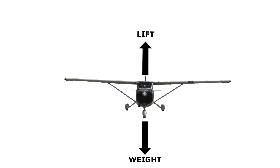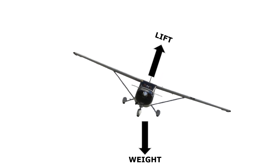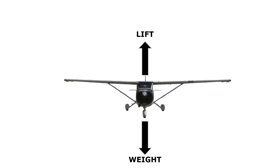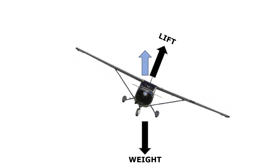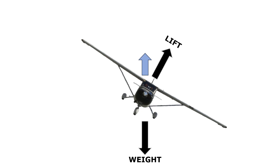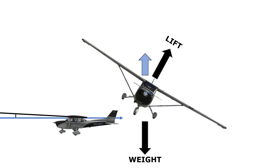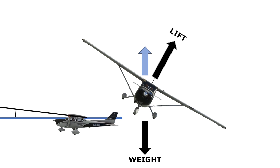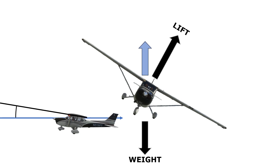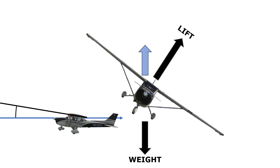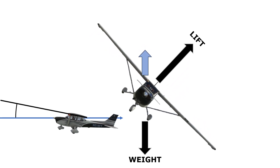In a turn, the wings bank, deflecting lift to the side and moving the aircraft that way. We're robbing the vertical component of lift by doing so. With the same lift generated at the same angle of attack, the aircraft won't hold altitude. We need to increase angle of attack to increase overall lift to the point where the vertical component of lift once again equals and counters the weight of the aircraft. The more we bank, the more we increase angle of attack.